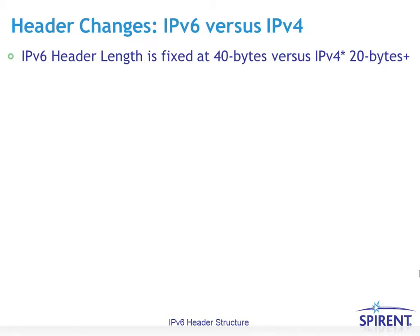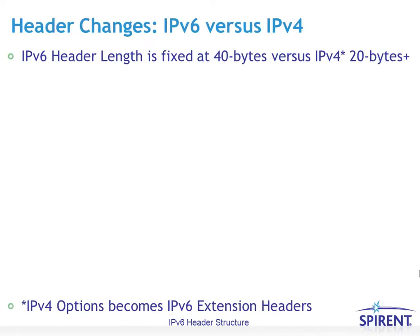First, the IPv6 header is a fixed length of 40 bytes, whereas the IPv4 header was always considered a variable length — 20 bytes minimum, but 20-plus bytes if it included options. IPv4 options have now become IPv6 extension headers, which are not considered part of the fixed-length IPv6 header and are more easily recognized by forwarding devices in between.